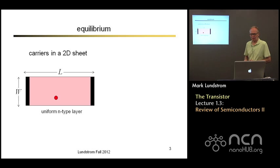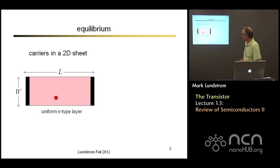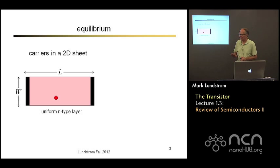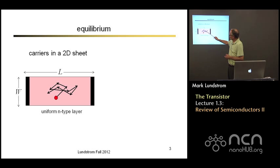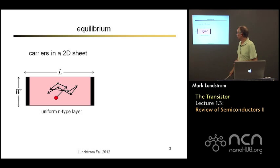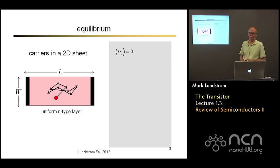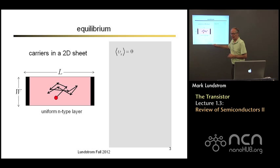Let's begin by thinking about equilibrium. I'm thinking about a two-dimensional sheet of electrons in the conduction band — some width W, length L, and two contacts. In equilibrium, if you could look at the electrons in the conduction band, they're executing random thermal motion. They move in a direction for a while, scatter off a lattice vibration or an impurity, bounce off in another direction, and just execute a random walk. No current is flowing on average — the average velocity is zero — but there's a lot going on microscopically.